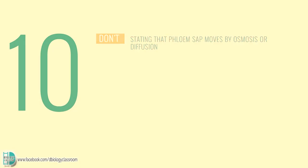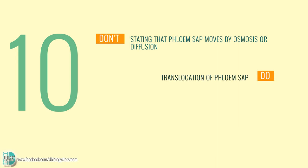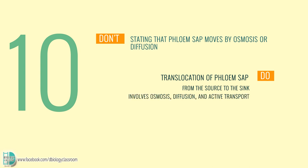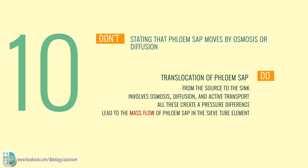Number 10: stating that phloem sap moves by osmosis or diffusion alone. Translocation of phloem sap from the source to the sink does involve osmosis, diffusion, and active transport. All these create a pressure difference and lead to the mass flow of phloem sap in the sieve tube element.